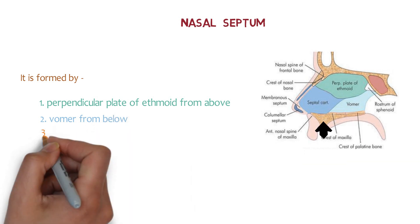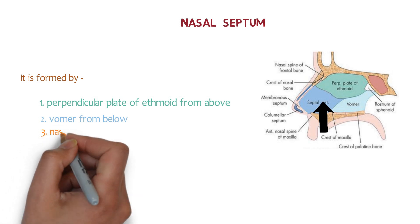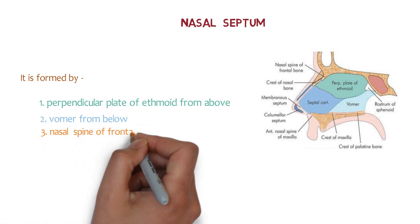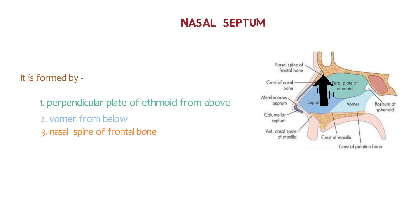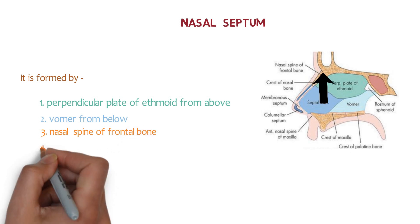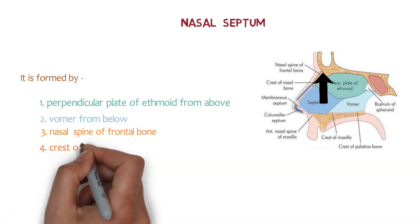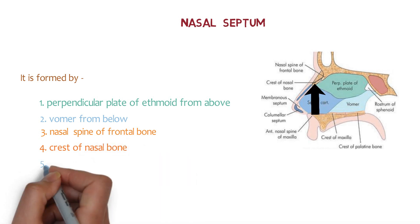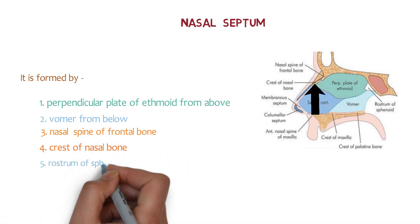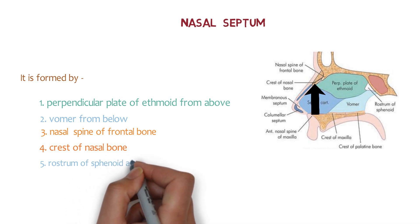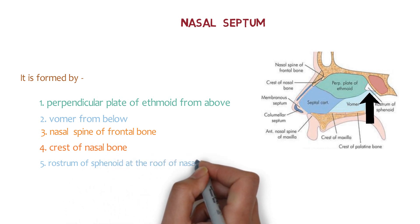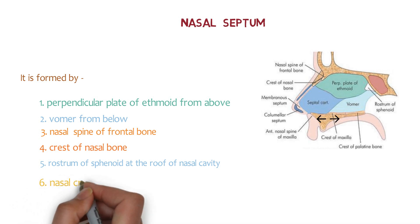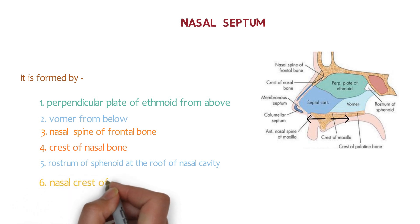Here we have the septal cartilage, highlighted in blue color. Above we have the nasal spine of the frontal bone, and just below it we have the crest of nasal bone. At the roof posteriorly we have the rostrum of sphenoid.